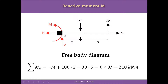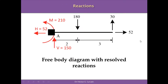To find the reactive moment, we take the summation of moments about point A. M is negative (anti-clockwise), plus 180 multiplied by 2 meters (clockwise, positive), minus 30 multiplied by 5 meters, all equal to zero. Solving, M equals 210 kN·m. The positive result confirms the assumed direction is correct. This completes the free body diagram with all external forces and reactions in equilibrium.